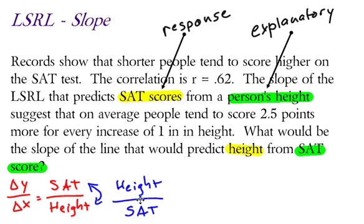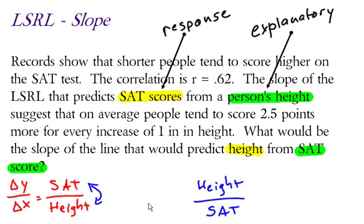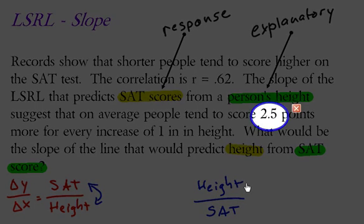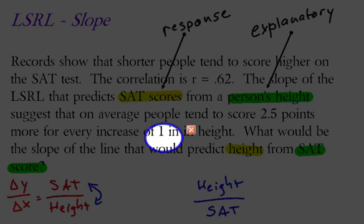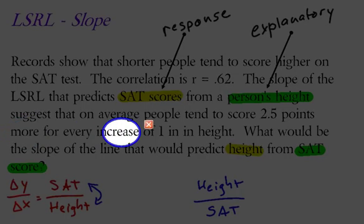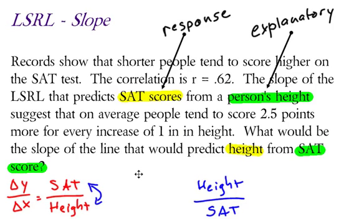Now, we have to use what they originally gave us to make this change. Originally, the slope, and again, I'm talking about the slope, I'm not talking about the correlation. But they tell us that the original slope says that, on average, people tend to score 2.5 points more for every increase of 1 inch. So the original would be 2.5 over 1.